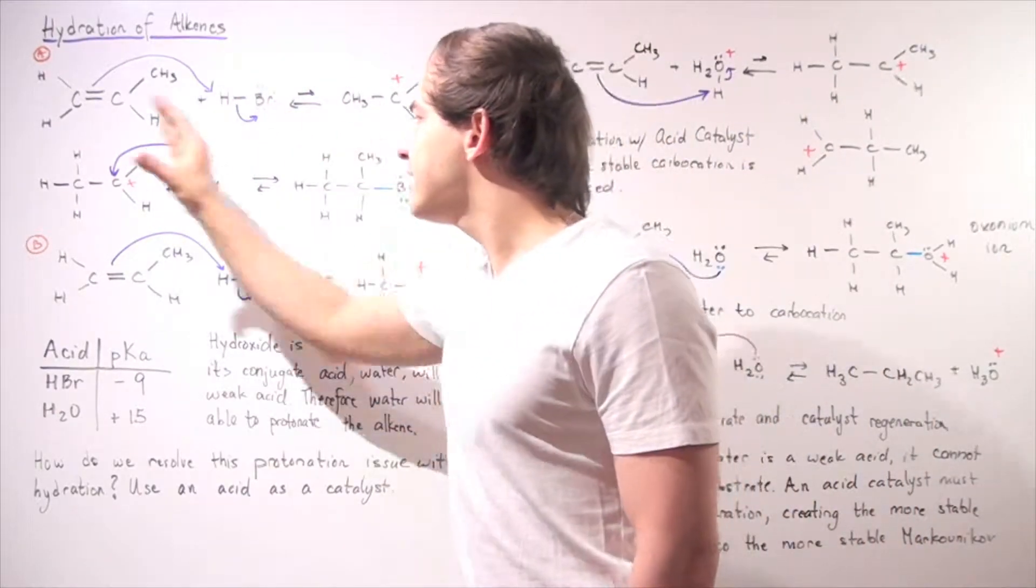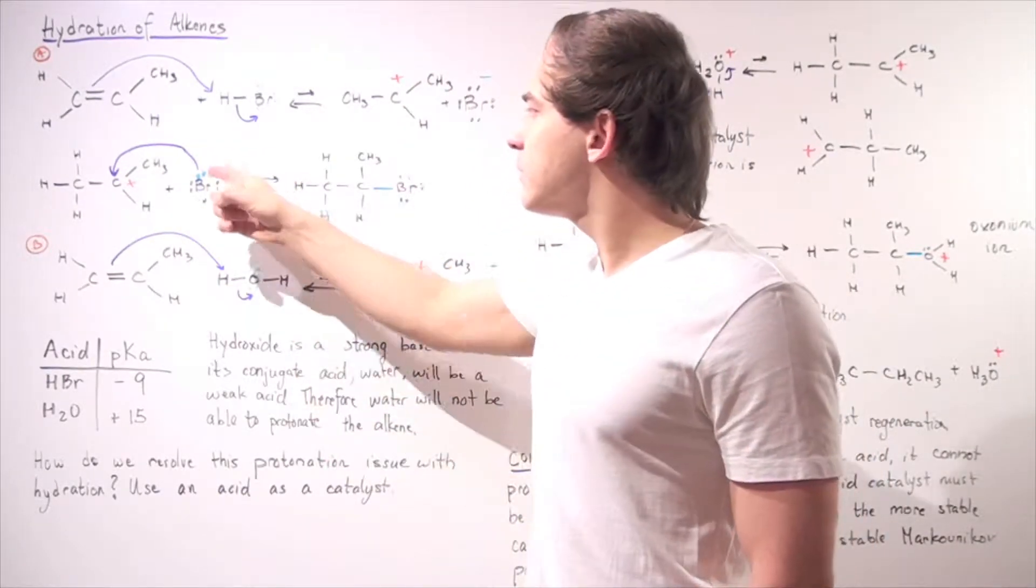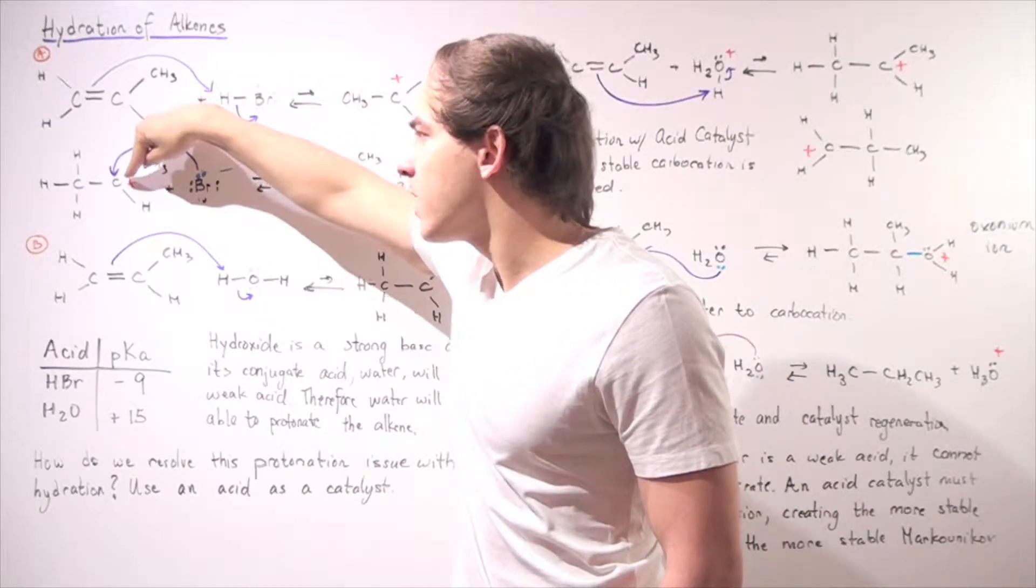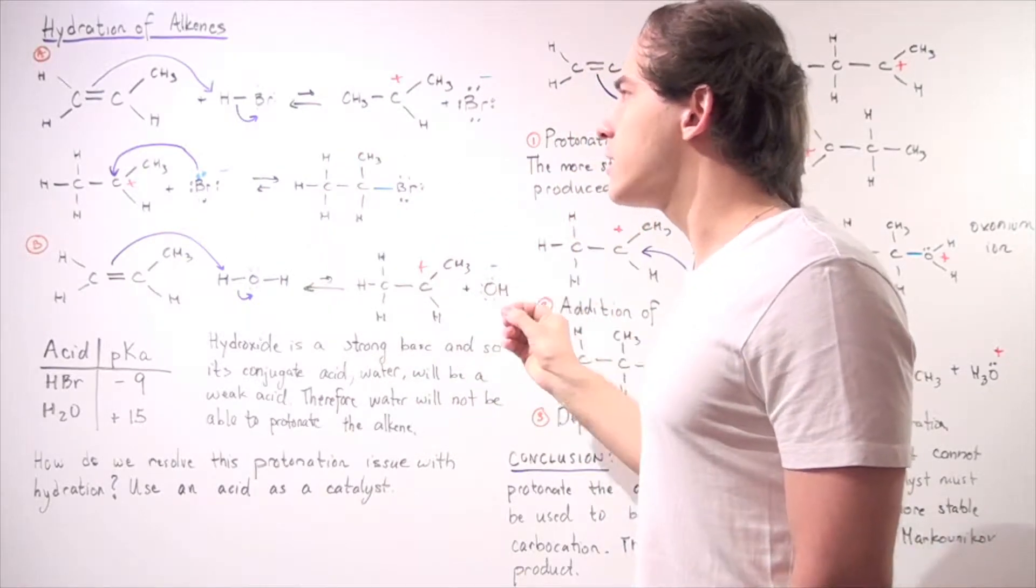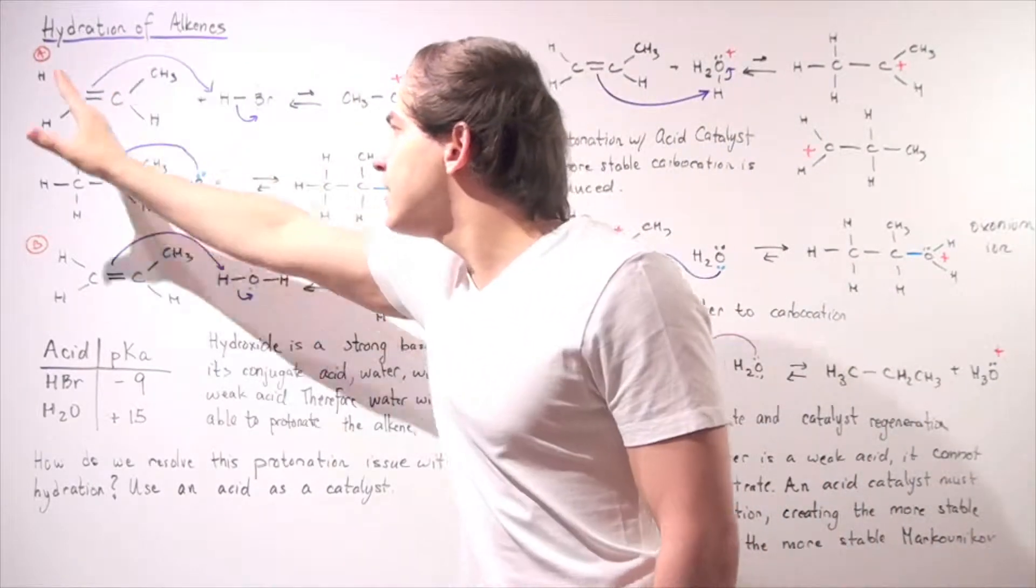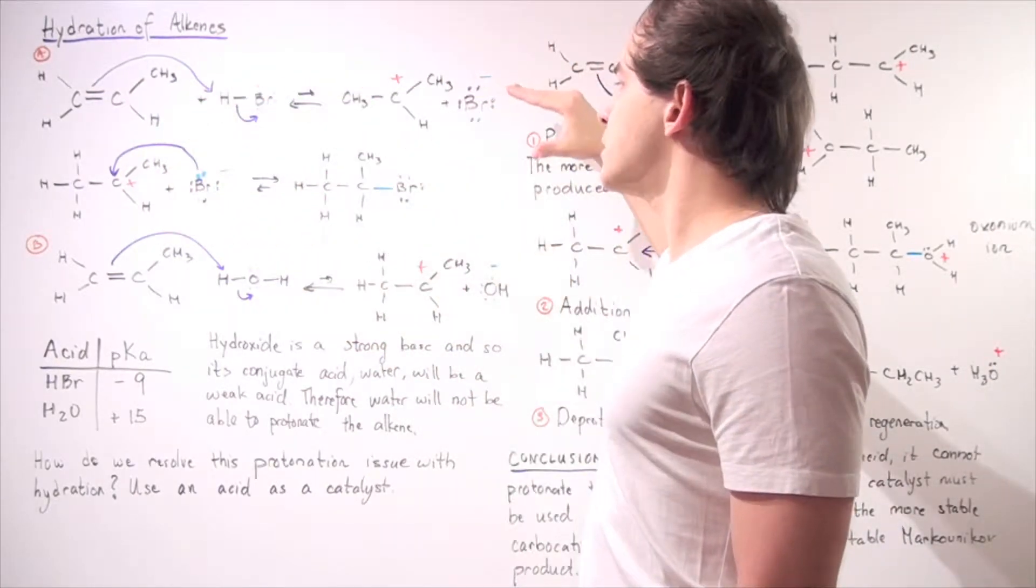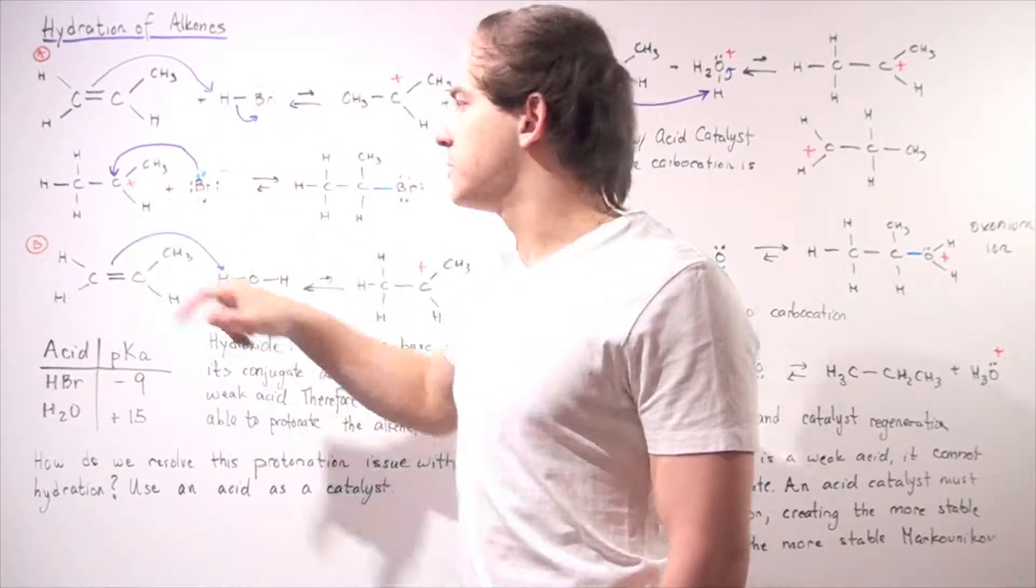Now in the second step, we have our bromine acting as a nucleophile using its pair of electrons to capture this positively charged carbocation carbon. And we form the following final product. So this is known as a hydrohalogenation reaction. The first step is our protonation step. The second step is our nucleophilic addition to our carbon.